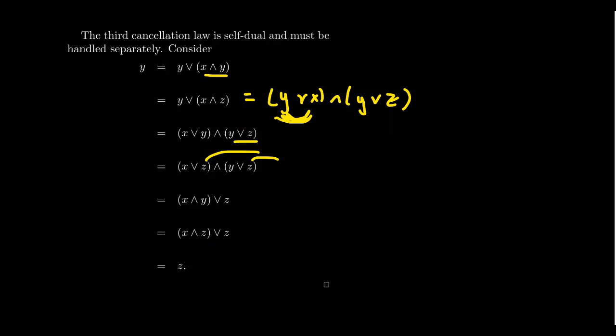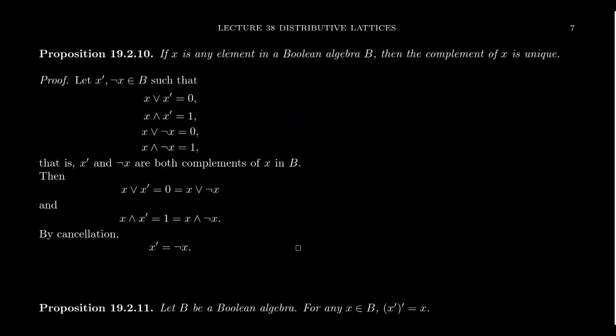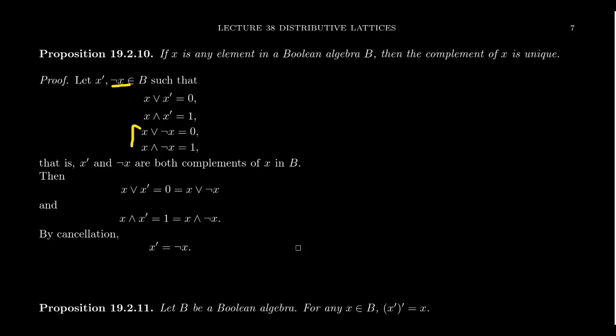Now a few other properties of Boolean algebras. If x is an element inside a Boolean algebra, then its complement is unique — analogous to the uniqueness of inverses in groups. Suppose x-prime and not-x are two different complements of x. Since x-prime is a complement: x join x-prime equals zero and x meet x-prime equals one. Since not-x is a complement: x join not-x equals zero and x meet not-x equals one.